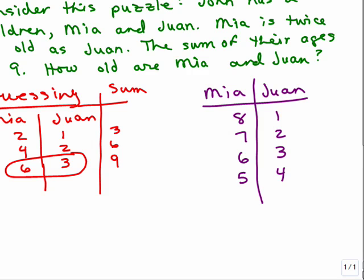All of these numbers add up to 9, but it also says Mia is twice as old as Juan, so that person might also come up with a correct solution of 6 and 3.